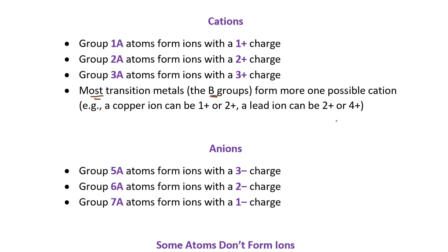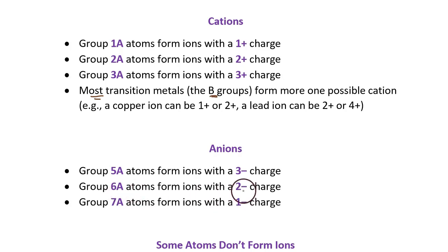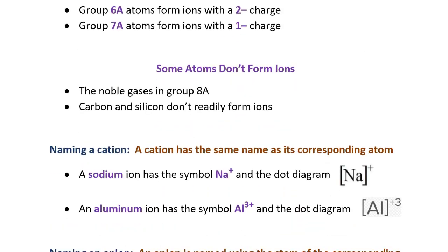Anions are created from elements in groups 5A, 6A, and 7A. Atoms from group 5A create ions with a negative 3 charge — because starting with 5 valence electrons, gaining 3 more makes 8, satisfying the octet rule. Atoms from group 6A create negative 2 charged ions, and group 7A creates negative 1 charged ions. The noble gases do not create ions because they already have a full valence layer — they don't need to gain or lose electrons. The exception is helium, which has 2 electrons in its outer layer. Carbon and silicon don't readily form ions either.